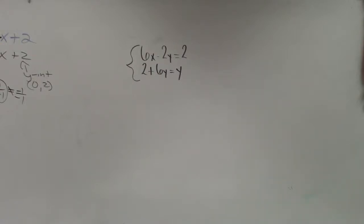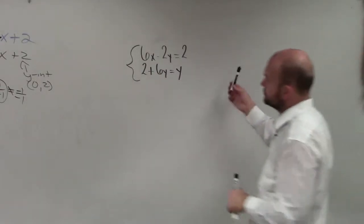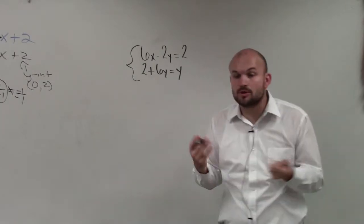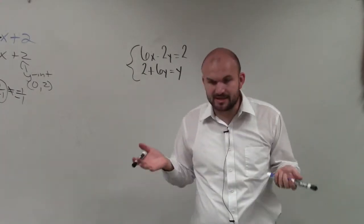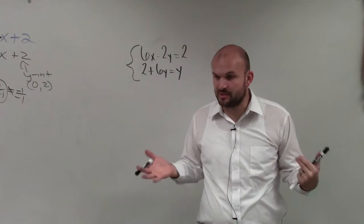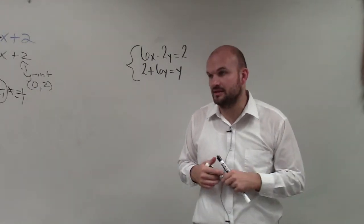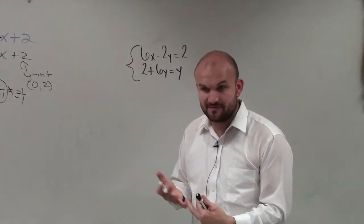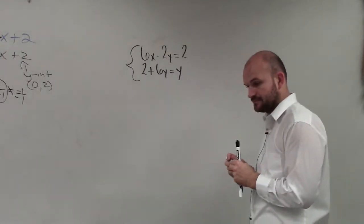So in this example, ladies and gentlemen, what we have is 6x minus 2y is equal to 2, and 2 plus 6x equals y. So basically what we're doing for this is I'm asking you just to graph each one of these separately and identify where they intersect.